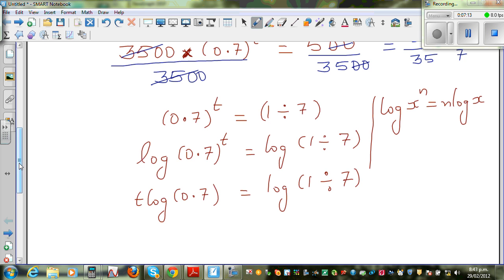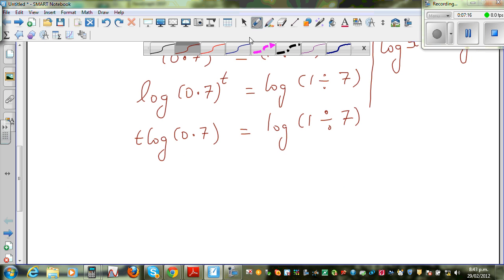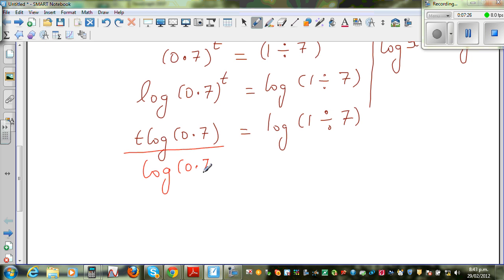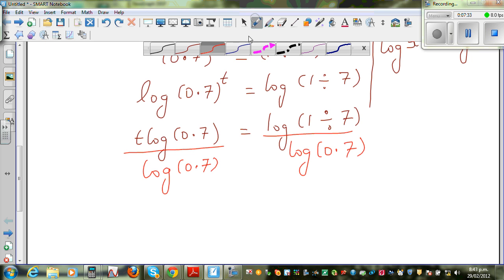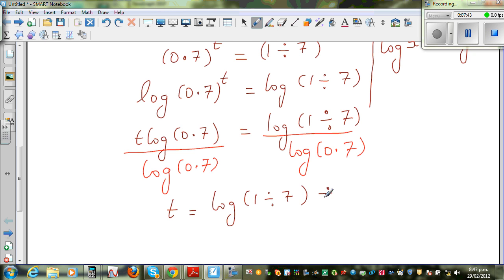So now I want to get rid of this log 0.7, which is times t. So you do the opposite. You can divide this side by log(0.7). If you divide on one side, you divide on the other side. So t is what we want to find. t = log(1/7) / log(0.7).